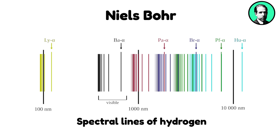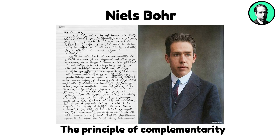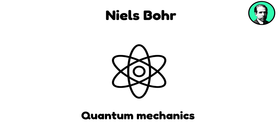This model successfully explained the spectral lines of hydrogen and laid the groundwork for future developments in quantum mechanics. Bohr introduced the principle of complementarity, which posits that objects can exhibit dual properties, such as being both a particle and a wave, but only one aspect can be observed at a time. This principle became a cornerstone of quantum mechanics, influencing how scientists understand and interpret quantum phenomena.